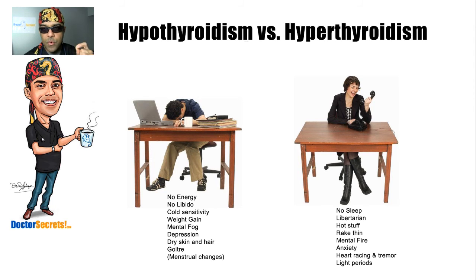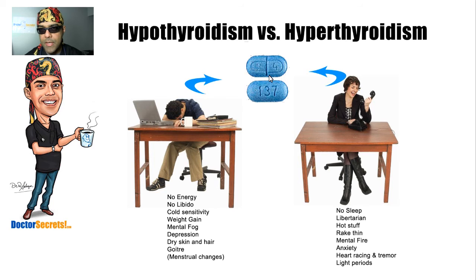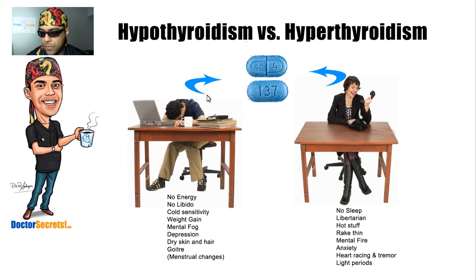Now that you understand the differences between hyper and hypothyroidism, here's a neat thing: even though these two conditions are so different, ultimately the last therapy usually tends to wind up being the same — thyroid medication. You might ask yourself, how could that be? Well, this picture here shows 137 micrograms of thyroxin, which is thyroid hormone. Obviously the person with too little thyroid hormone needs thyroid supplementation, but why would this girl with an overabundance of thyroid hormone need it too?